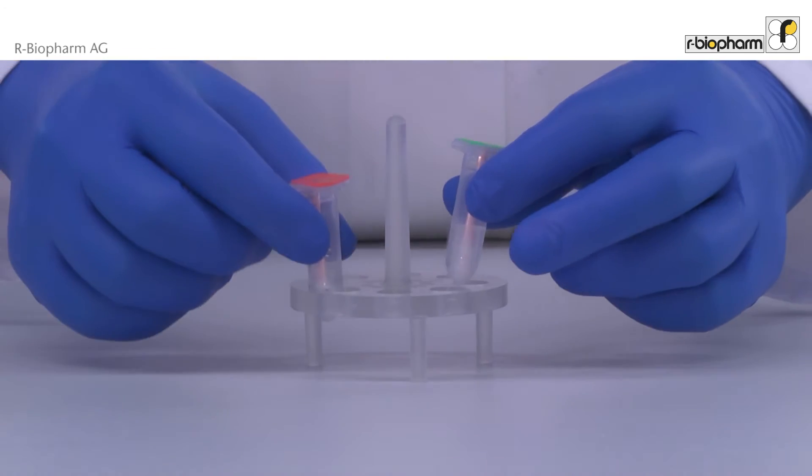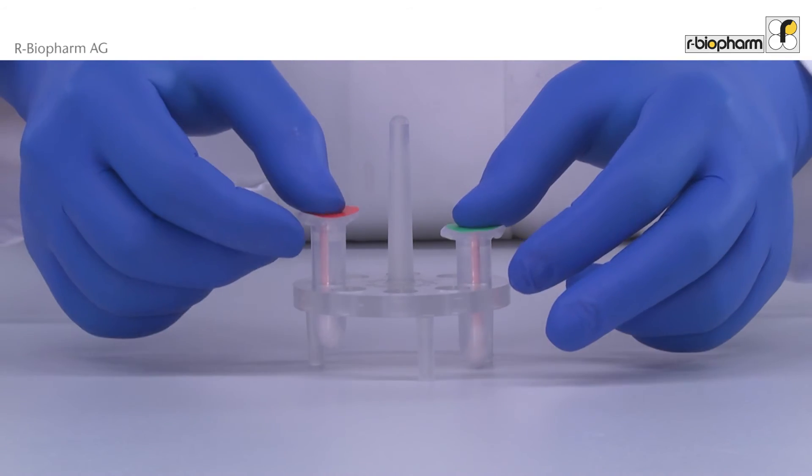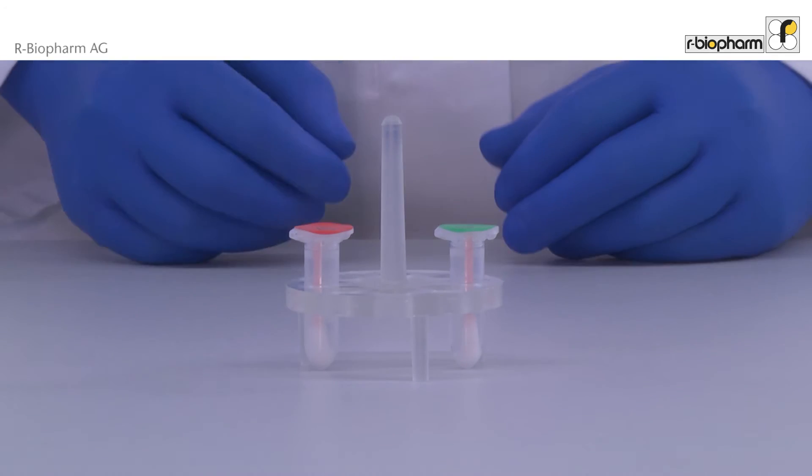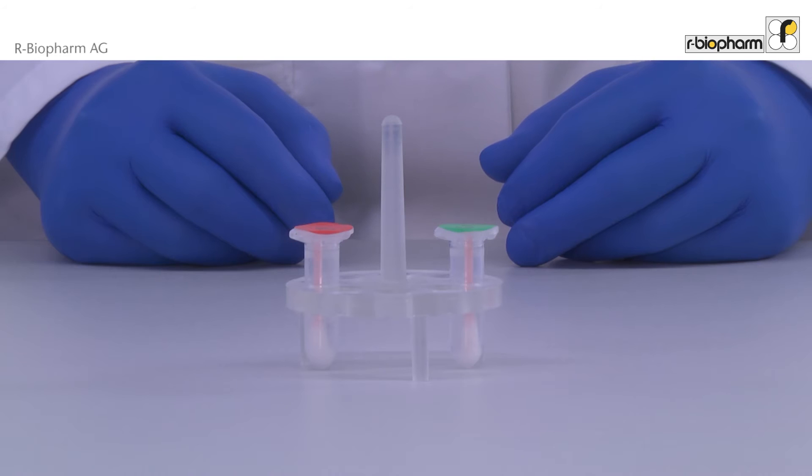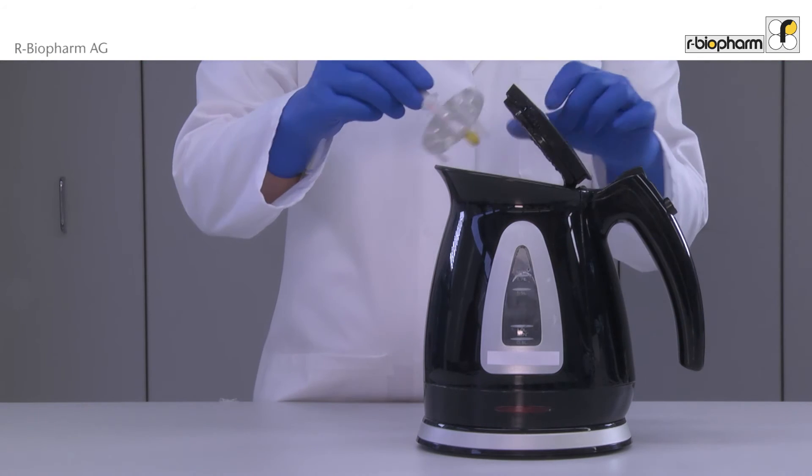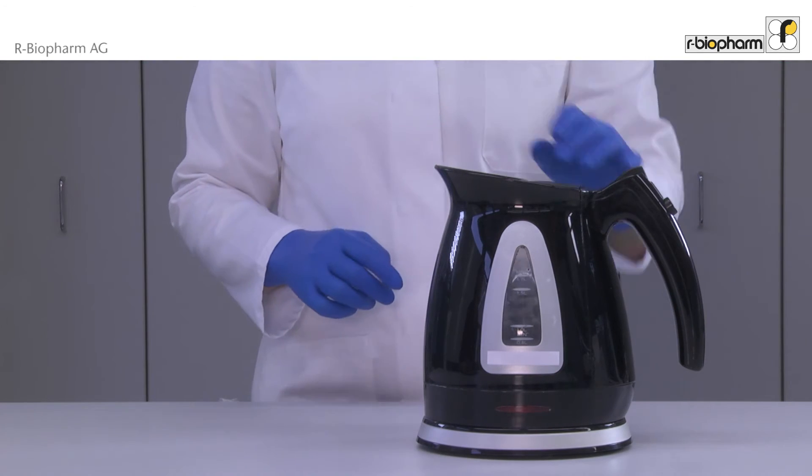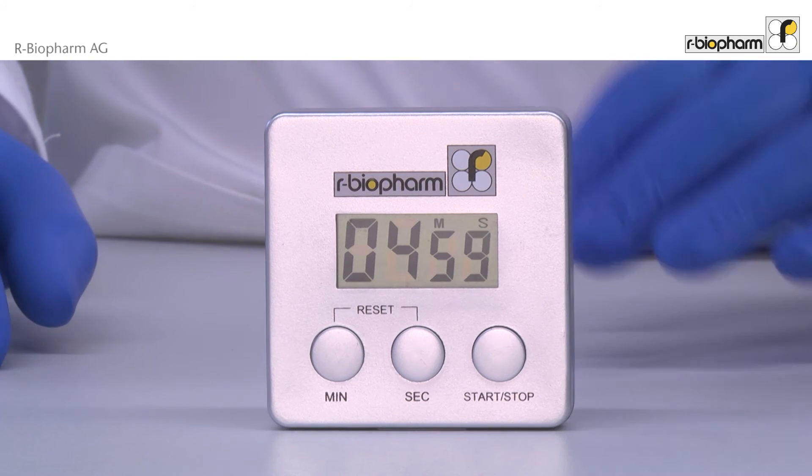Then insert the closed vials into a floating rack. Green is the surface swab and red is the blender swab. Insert the floating rack into boiling water and incubate for five minutes.